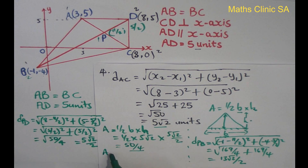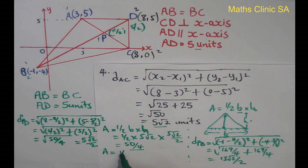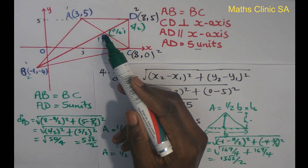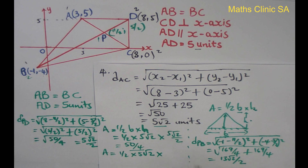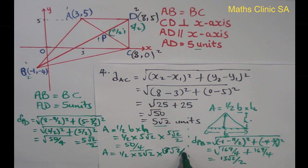For the second triangle, do the same thing: half base times height. The base is again 5 root 2, and the height is PB which is 13 root 2 over 2. So the area of the second triangle equals half times 5 root 2 times 13 root 2 over 2.